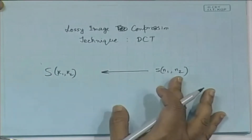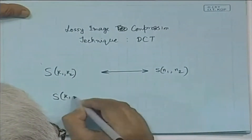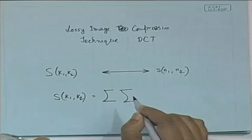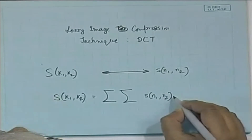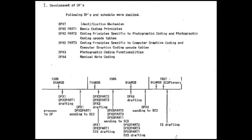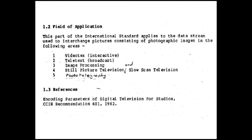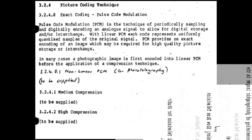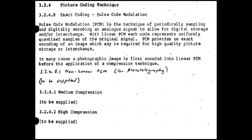In a computer lab in California, someone else was coding away, busily breaking those digital images down into translatable, transmittable, and totally reproducible pictures.